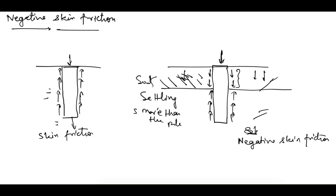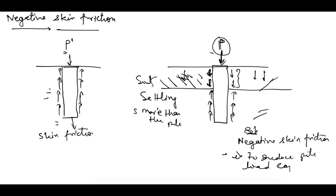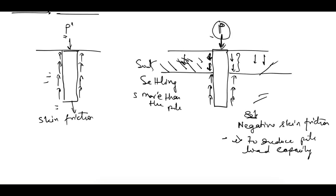We are interested in negative skin friction because it adds to the load on the pile. The actual applied load P is in the downward direction, and this frictional drag is also in the downward direction. So the required load capacity P' is more than P, because some part of the load capacity is consumed by the negative skin friction. The effect of negative skin friction is to reduce pile load capacity.